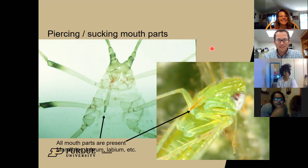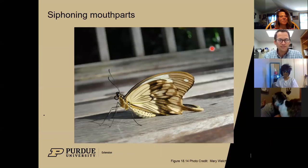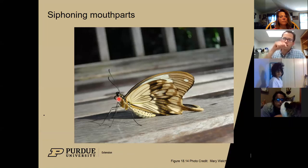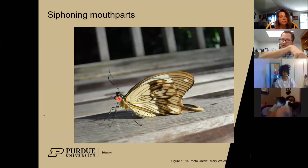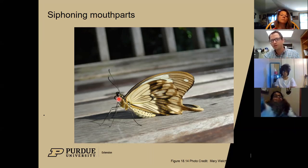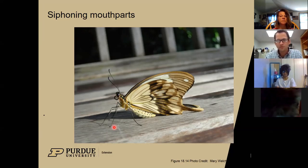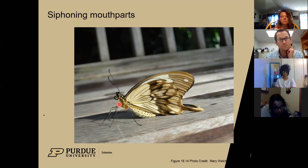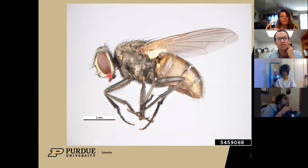For siphoning - this is butterflies. You can see it's all rolled up, and butterflies like to eat nectar out of flowers. They roll out that proboscis, or the tube that goes down into the flower, and get the nectar out. Now, caterpillars - the immature baby phase - don't have that mouth part. They have chewing mouth parts because they eat plants. And here's our spongy mouth part.